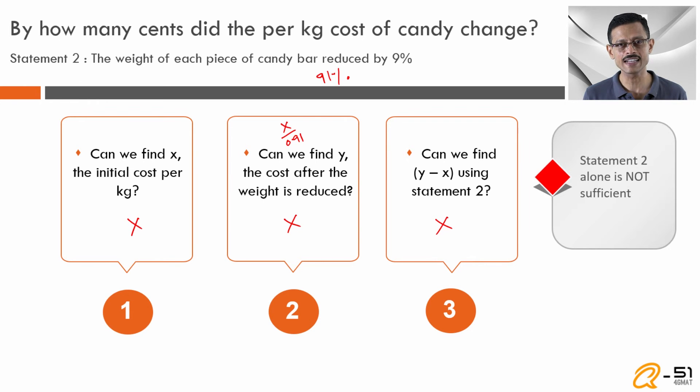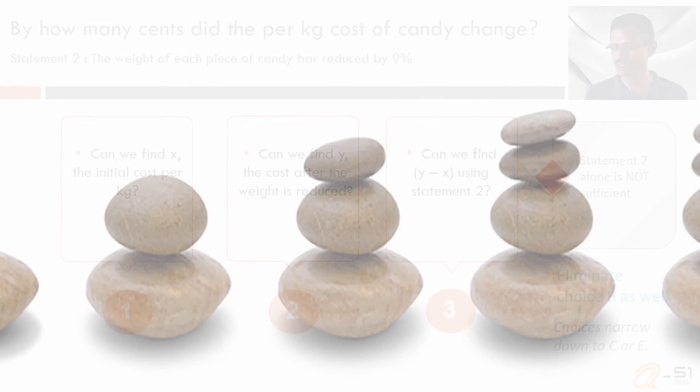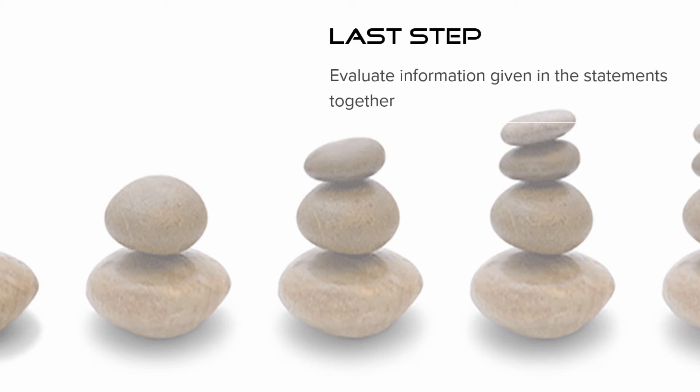We are left with choices B, C, and E. Now we are going to rule out B also. What we are left with is C or E. The last step is: let us combine the information in the two statements, see if we can make sense and get a value for y minus x.